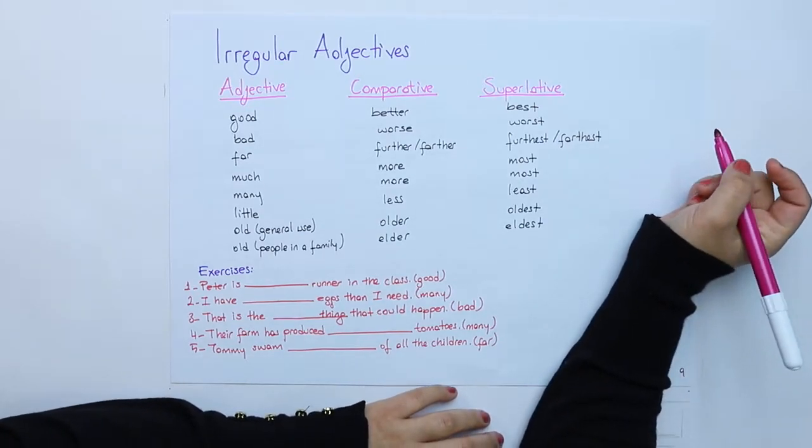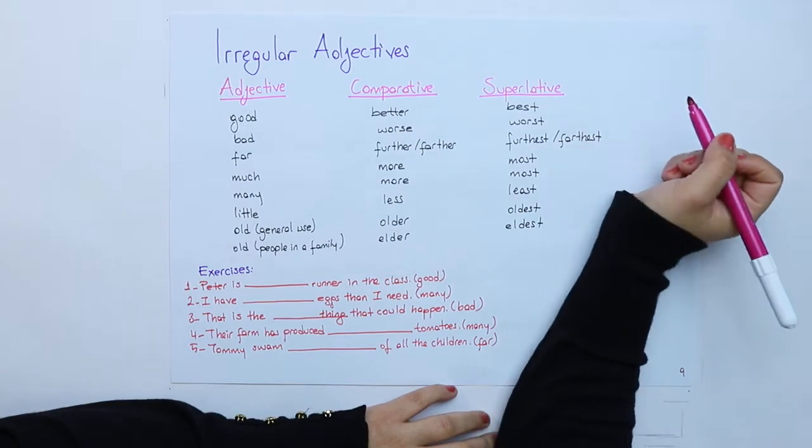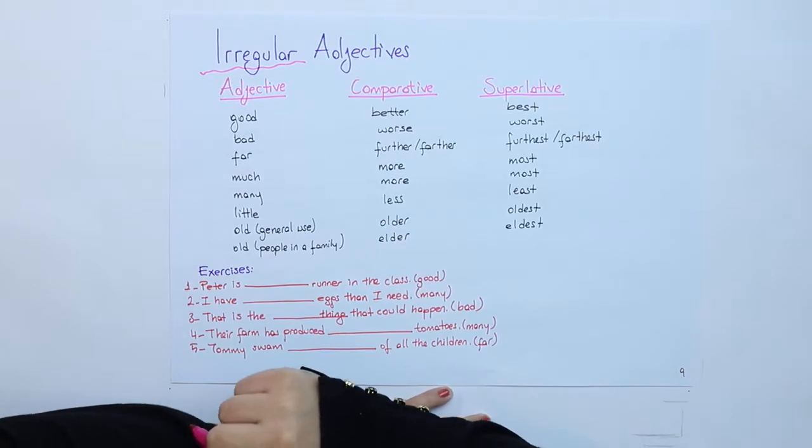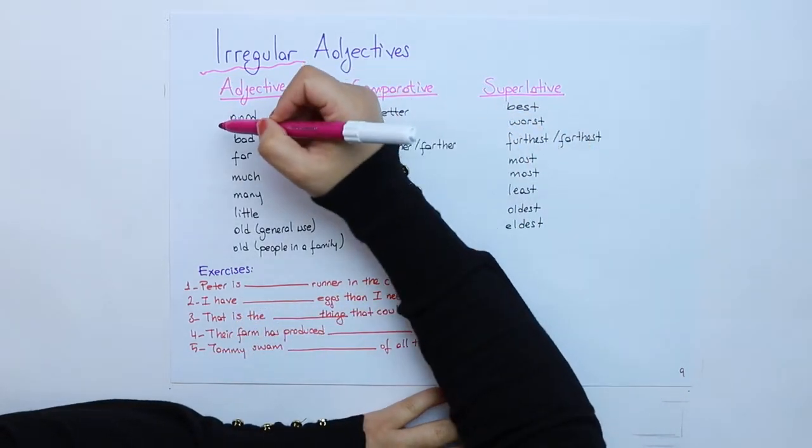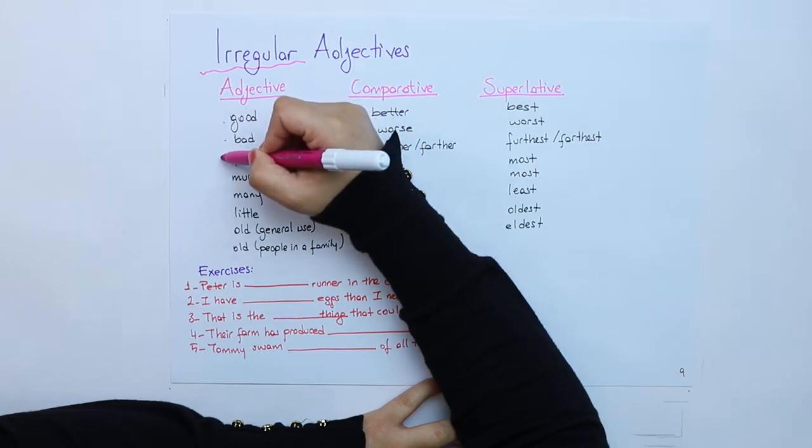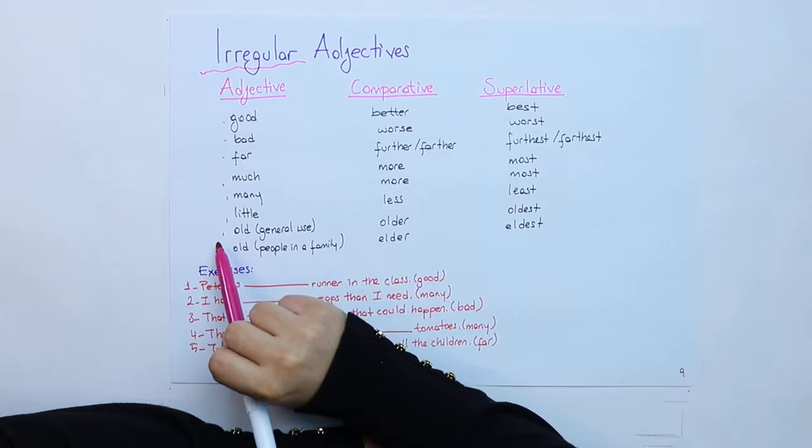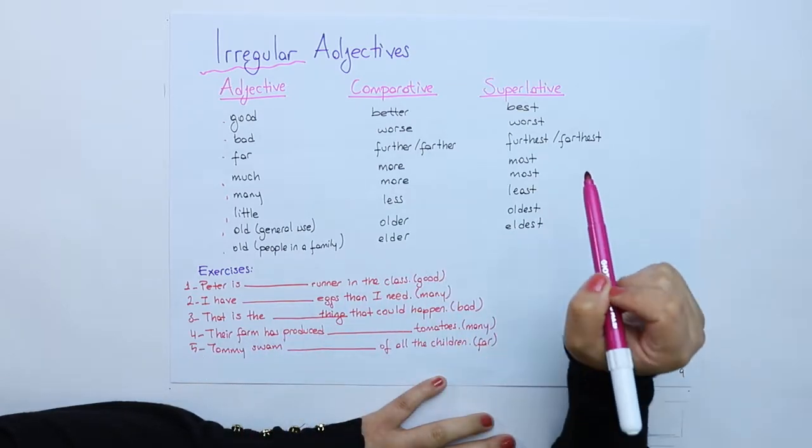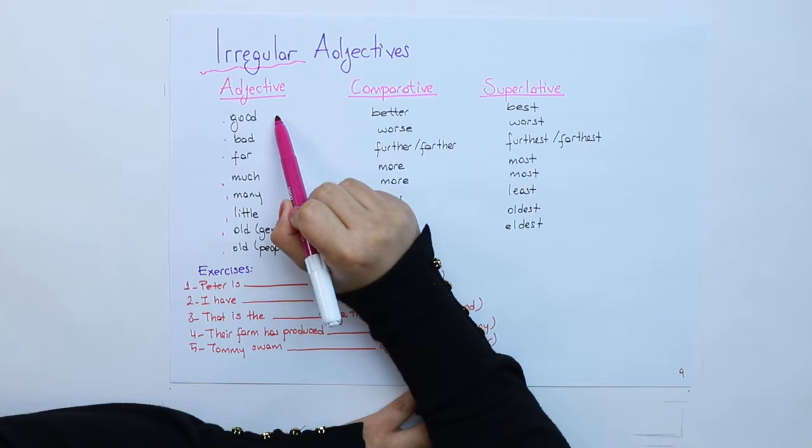Here is an important part for the usage of both comparative and superlative. There are some irregular adjectives: good, bad, far, much, many, little, old are the irregular ones and you should learn them by heart.